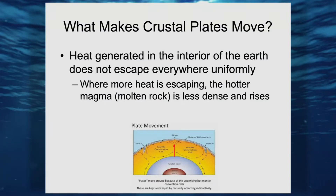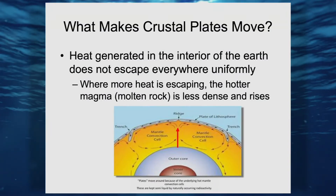The question is: what makes crustal plates move? We have to go back to the cross section of the Earth, because that's where this process begins. There is heat escaping from the interior of the Earth, and it does not escape everywhere uniformly — there are some preferred regions. Where heat is escaping, it is heating up the molten rock — the magma — making it a little bit less dense. Because it is less dense, there's a region of rising magma. Where it rises up, it is coming up out of the outer core, headed toward the asthenosphere or the crust. Because of the upward force of this magma, this will raise the Earth's crust just a little bit.